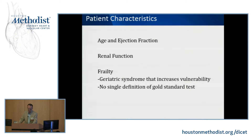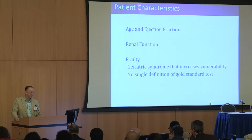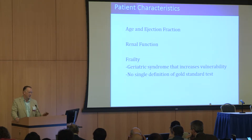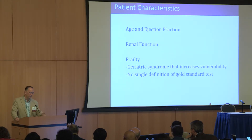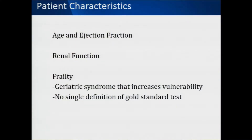When evaluating someone beyond anatomy and disease, age and ejection fraction have been the standard fundamentals that predict risk from procedures. Renal function is the other powerful predictor. Those three alone give a good sense of risk for cardiac surgery, TAVR, or coronary intervention. Beyond that, since this is primarily a disease of the elderly, understanding and quantifying frailty has become very important in evaluating patients.